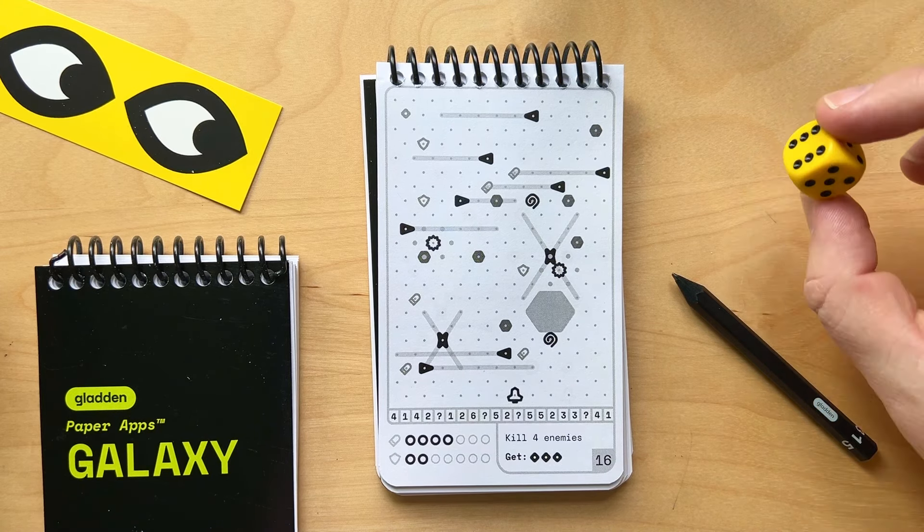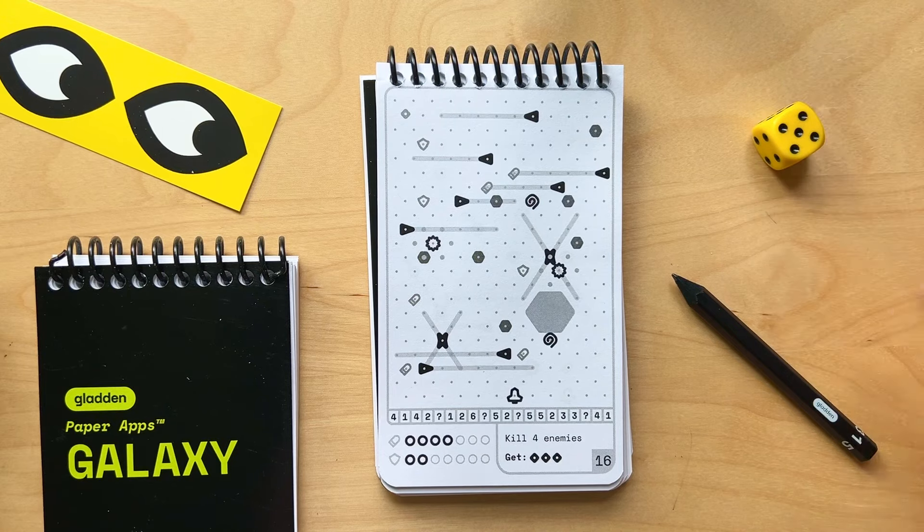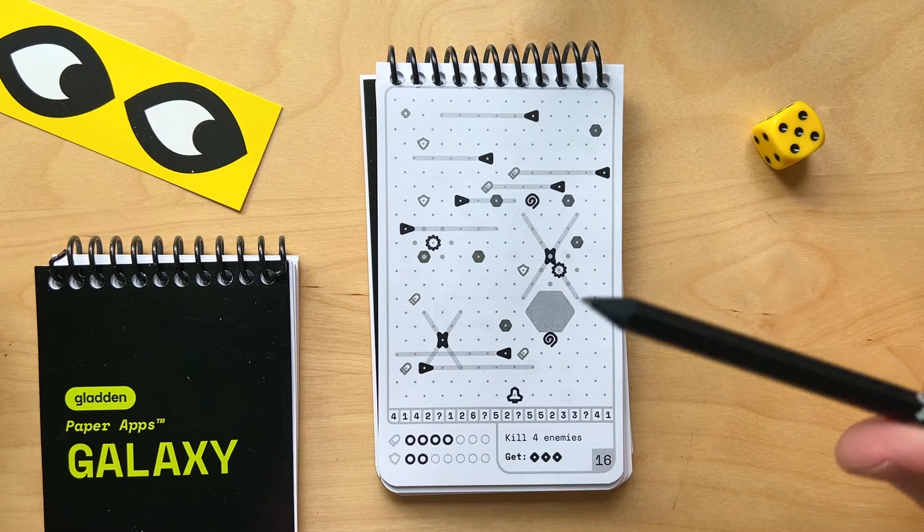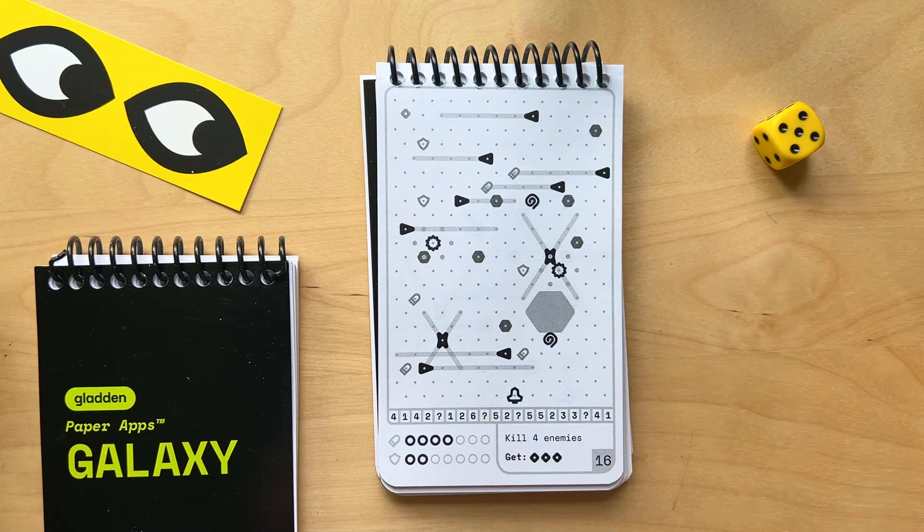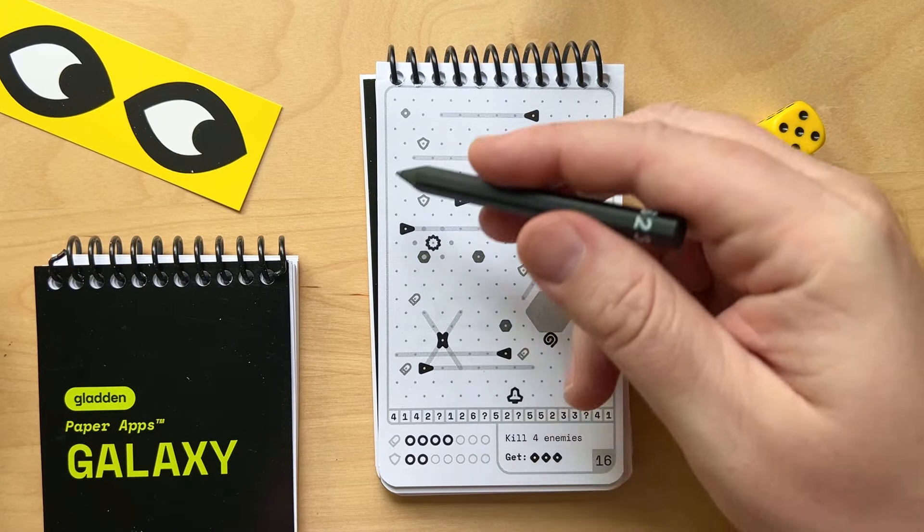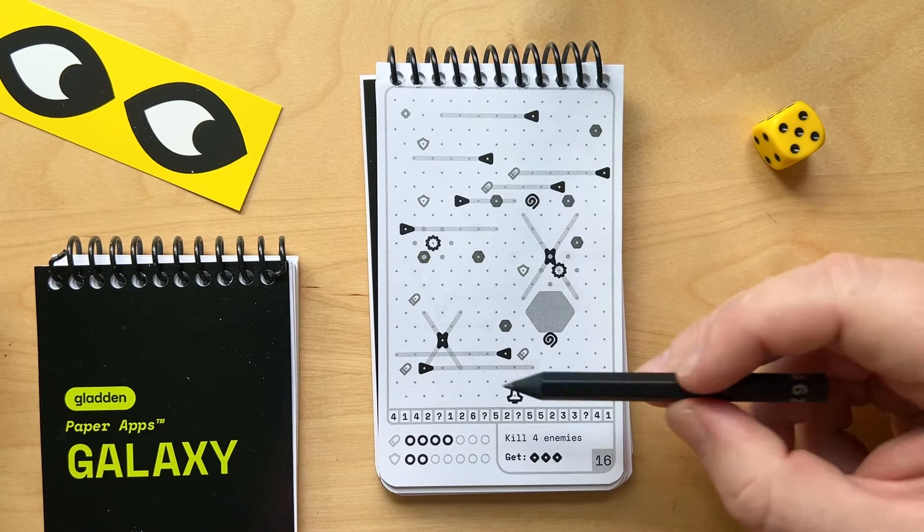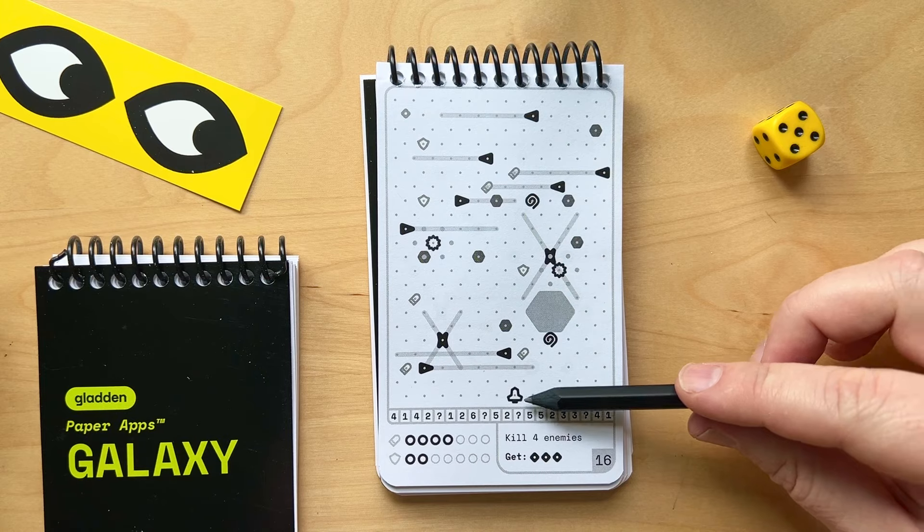You can play with a pencil and a D6, or our pencil dice, which is a pencil and a D6. That's what I'll be using. So let's take a look at a sample level here. This is the layout of the level. This is your ship. You always start at the bottom.